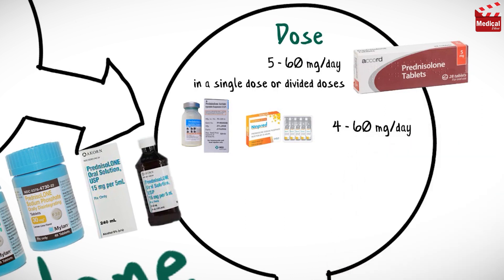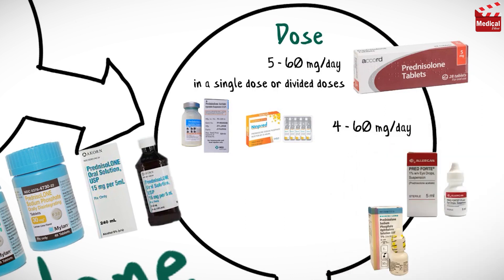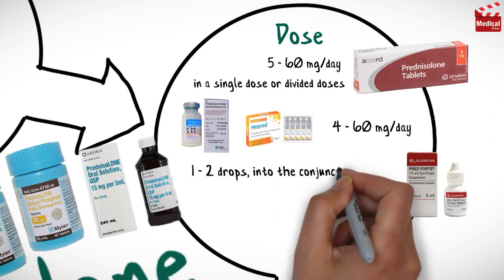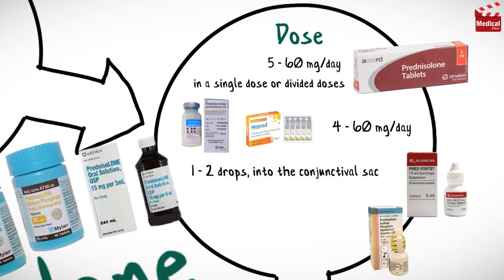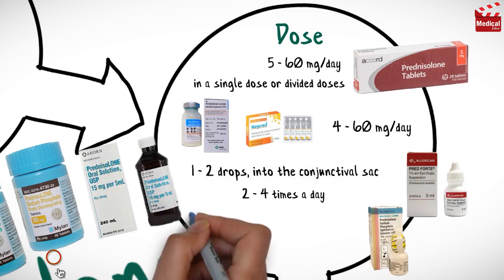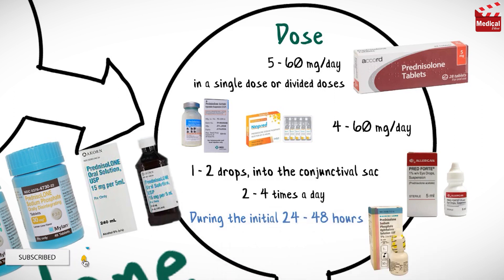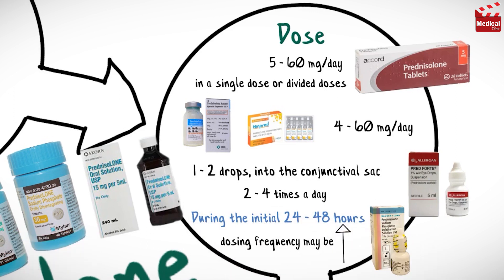The usual dose of prednisolone eye drops is 1 to 2 drops into the conjunctival sac of the affected eye, 2 to 4 times a day. During the initial 24 to 48 hours, dosing frequency may be increased if necessary.